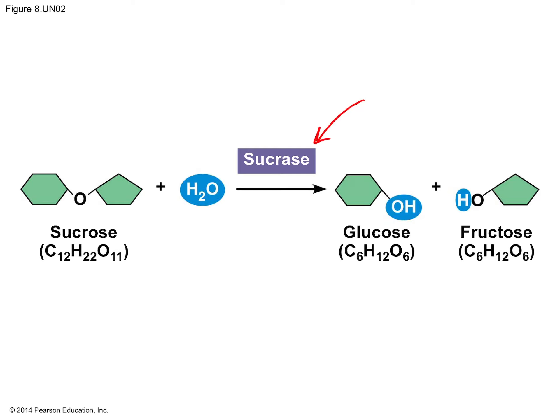An important point about enzymes is that they're typically named for what they work on. So sucrase is an enzyme that breaks down sucrose. If you ever see an ending of -ASE on the name of a molecule, you automatically know that molecule is an enzyme. You know sucrase is an enzyme because of the ASE ending, and you also know that sucrase works on sucrose. Enzymes are very specific — sucrase only operates on sucrose, nothing else.